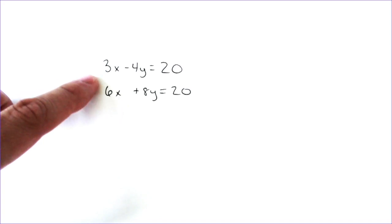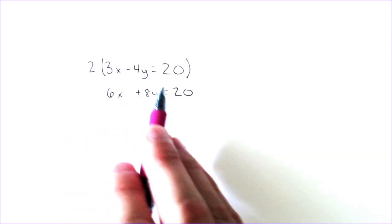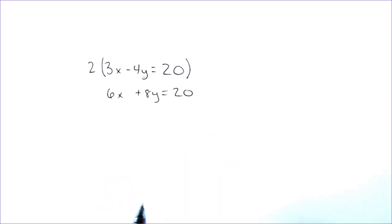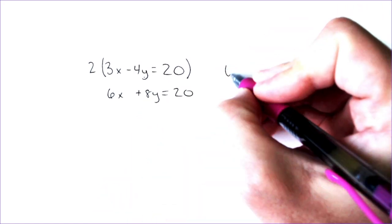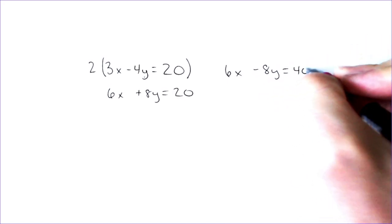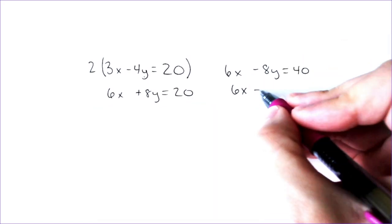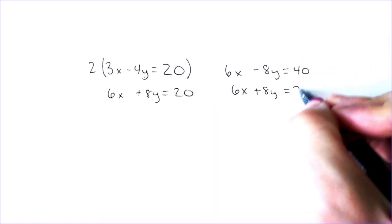I'm going to multiply by 2 on the top equation, because that would allow me to make this 2 multiplying by 4, and -8 and positive 8 underneath it would allow it to eliminate. So I'm going to distribute the two. We get 6x minus 8y equals 40. And underneath that, I'm rewriting this equation, 6x plus 8y equals 20.